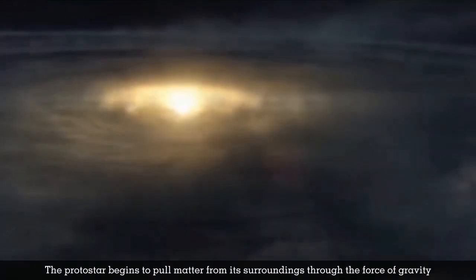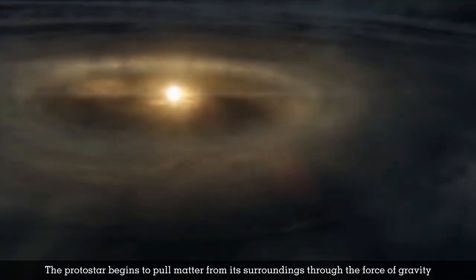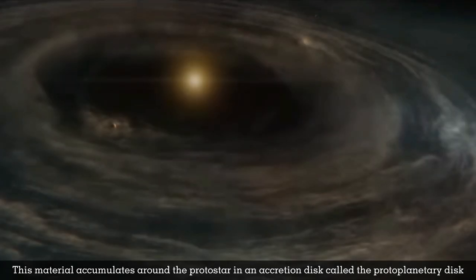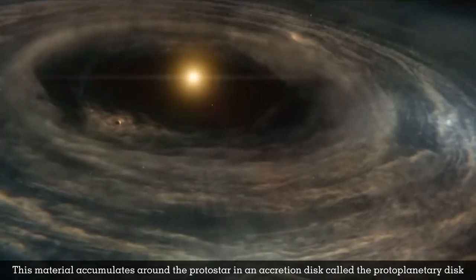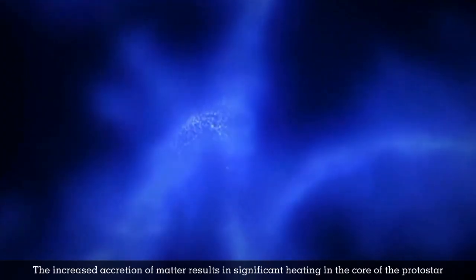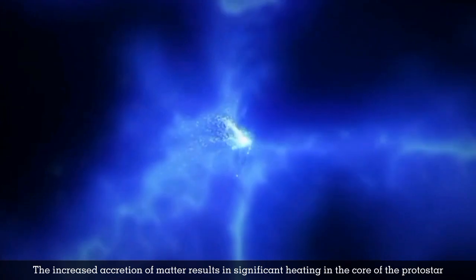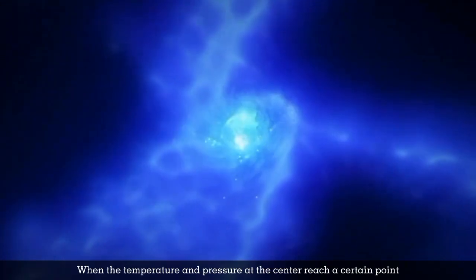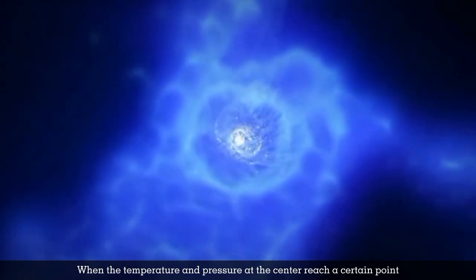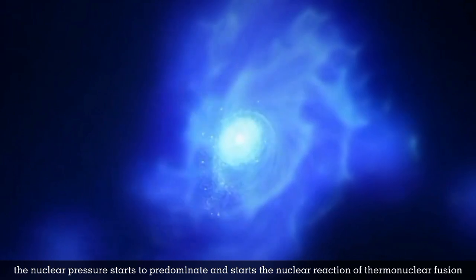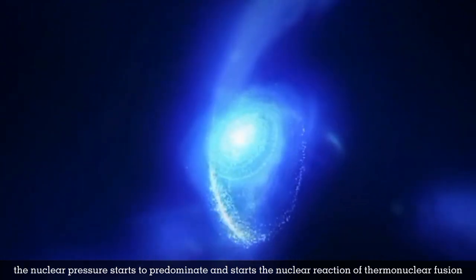The protostar begins to pull matter from its surroundings through the force of gravity. This material accumulates around the protostar in an accretion disk called the protoplanetary disk. The increased accretion of matter results in significant heating in the core of the protostar. When the temperature and pressure at the center reach a certain point, the nuclear pressure starts to predominate and starts the nuclear reaction of thermonuclear fusion.